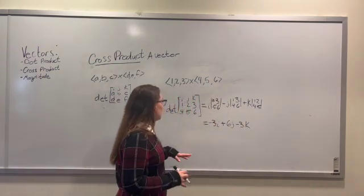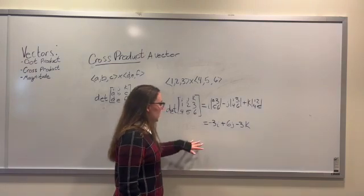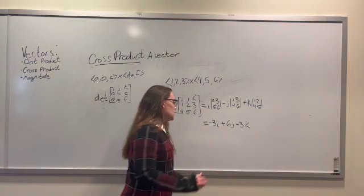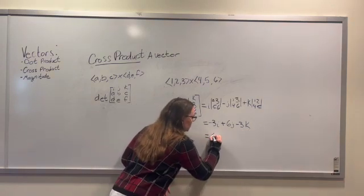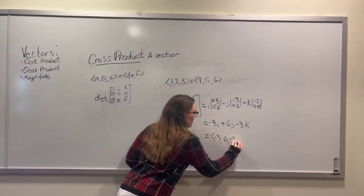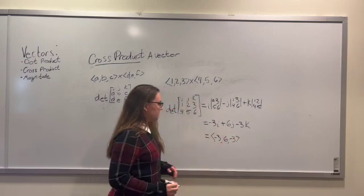And after doing the work of finding the determinant of this matrix, we get that our vector is negative 3 i plus 6 j minus 3 k, or negative 3, 6, negative 3. And we're done.